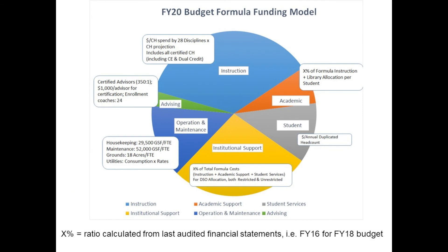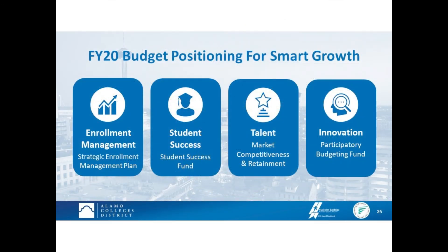We do overlay that standard formula with anything we're doing district-wide. When we invested in advising to move to 350-to-1 — one advisor for every 350 students — that was a change from history. Nobody had the money for that before. When we set aside money to do that, we overlaid it and gave all of our colleges their portion of that on top of normal operations. The formula here gives you the metrics we use. When we look at strategic initiatives and overlays, we talk with the board about what is part of our strategic plan and where we want to invest.